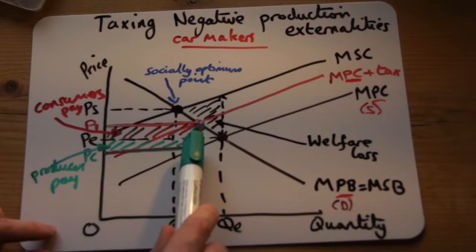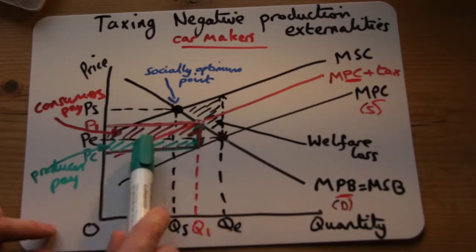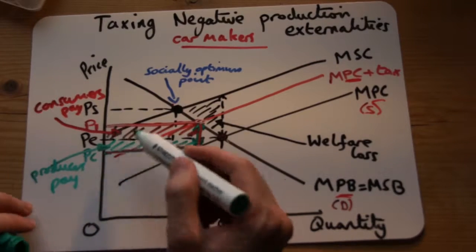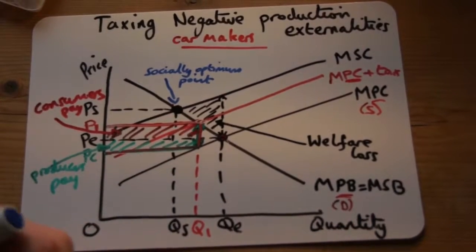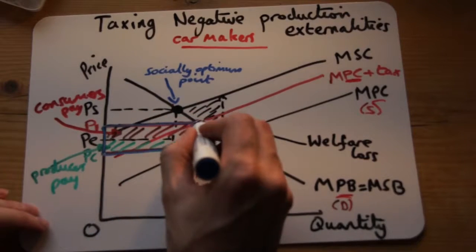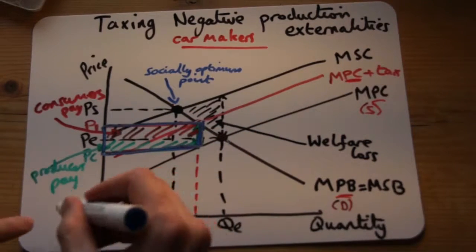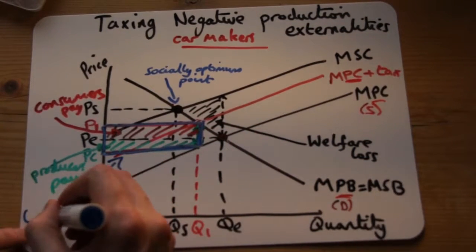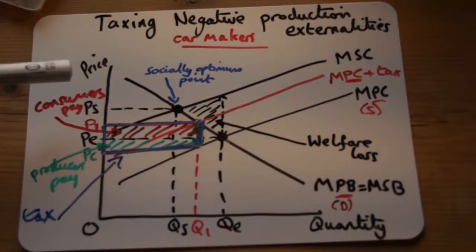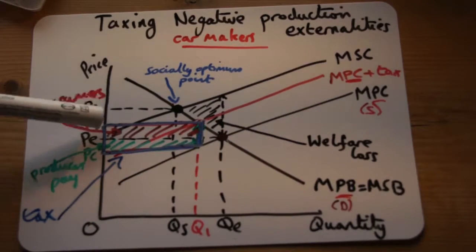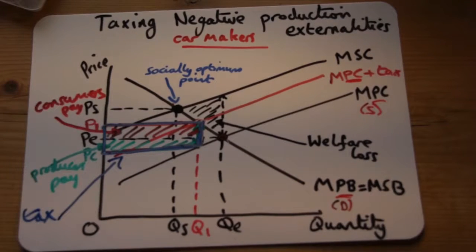And that entire amount there is actually paid to the government. This entire box here is paid to the government. The consumer pays the price difference and the producer pays the rest to the government.